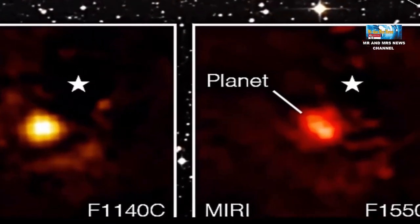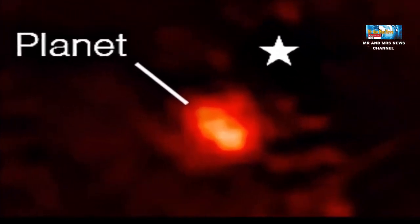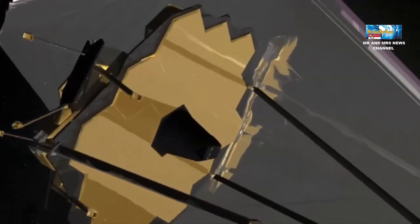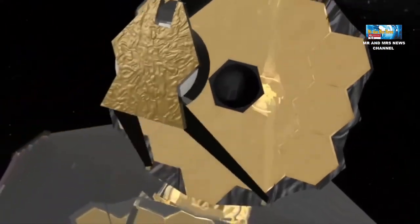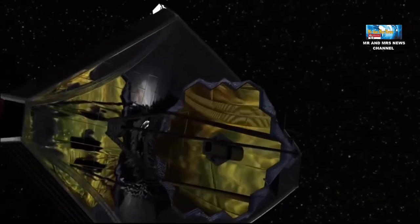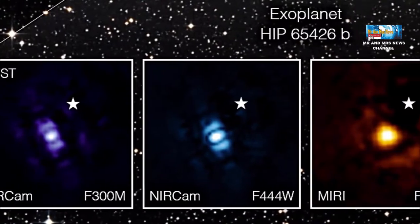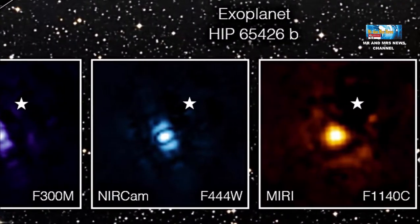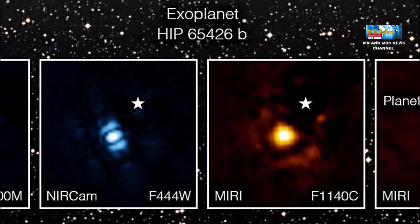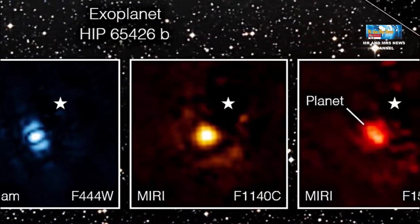Planet ini terletak sekitar 385 tahun cahaya dari bumi. Planet ini dapat dilihat dalam 4 pita cahaya inframerah yang berbeda seperti yang diambil oleh instrumen Webb yang berbeda. Webb melihat alam semesta dalam cahaya inframerah yang tidak dapat terlihat oleh mata manusia, menjadikannya observatorium luar angkasa yang sempurna untuk menangkap detail tentang dunia yang jauh.